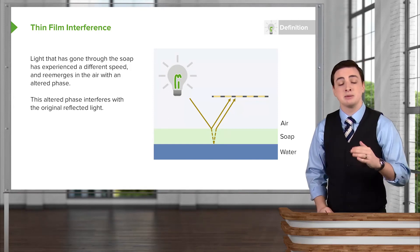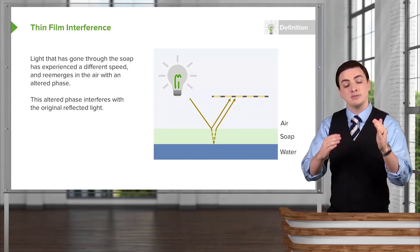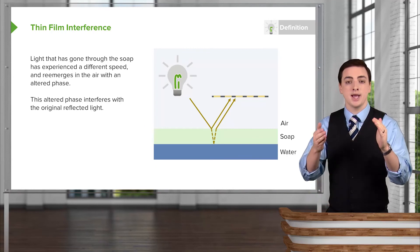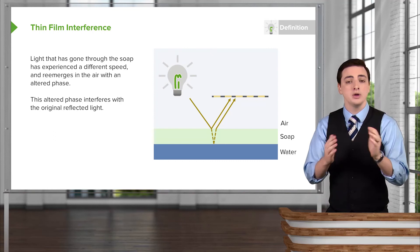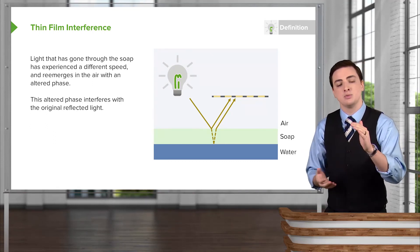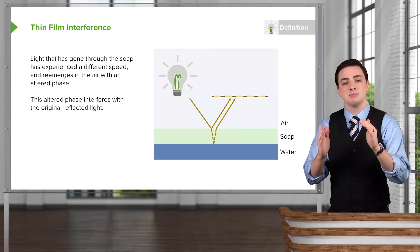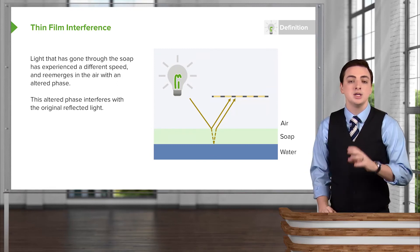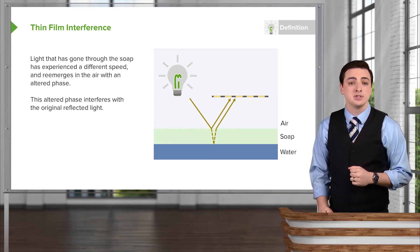So for example, now the wave that bounced off the surface might be at a peak, while the wave that entered into the medium and came back out might have evolved in such a way that it is now at a trough, or it could have been the exact opposite, where the bouncing wave was a peak and the one that went in and back out was also at a peak. And so we could have either of these two different types of phenomena.